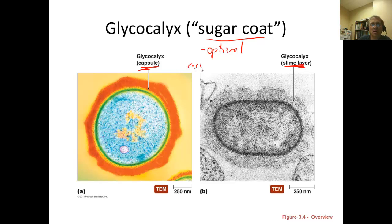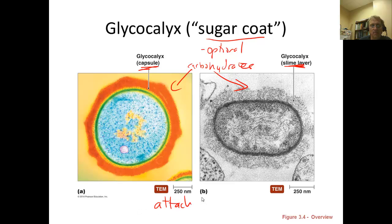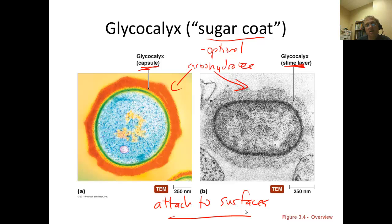Both the capsule and slime layer are made out of carbohydrates or sugars, which surround and help give that cell some shape. In both cases, the glycocalyx — whether the tightly associated capsule or the more loosely associated slime layer — helps the cell to attach to surfaces. A prokaryotic cell that lacks a glycocalyx will be less able to attach to various surfaces. In chapter 6, we'll see how a capsule greatly facilitates biofilm formation, and in the chapter on disease, how glycocalyx helps a microorganism more easily cause disease in the human body.